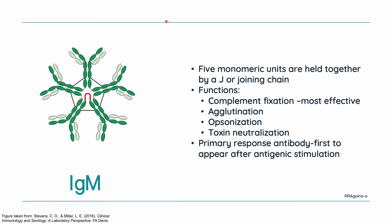Next, let's talk about IgM. IgM is composed of five monomeric subunits held together by a J-chain, or joining chain. It is a very large antibody and has the most antigen binding sites of any antibody — specifically 10 binding sites. Because of this, it functions as the most effective antibody in complement fixation. It can also be responsible for agglutination, opsonization, and toxin neutralization. IgM is called a primary response antibody because it is the first to appear after antigenic stimulation. So when we test for antibodies, a high level of IgM indicates that the patient has an ongoing infection.